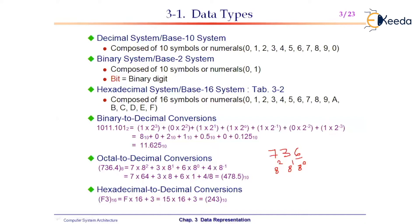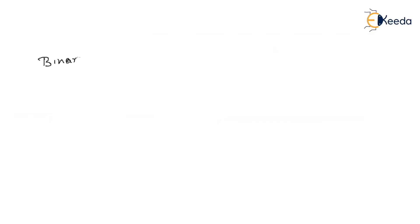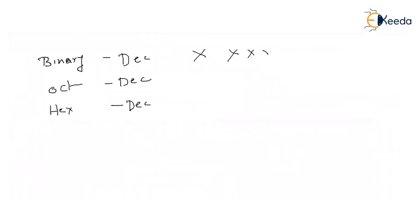Any number system, when converted to decimal, follows the same pattern. For binary to decimal, a number xxxx has weights 2^0, 2^1, 2^2, 2^3 — multiply each digit by its weight and add.